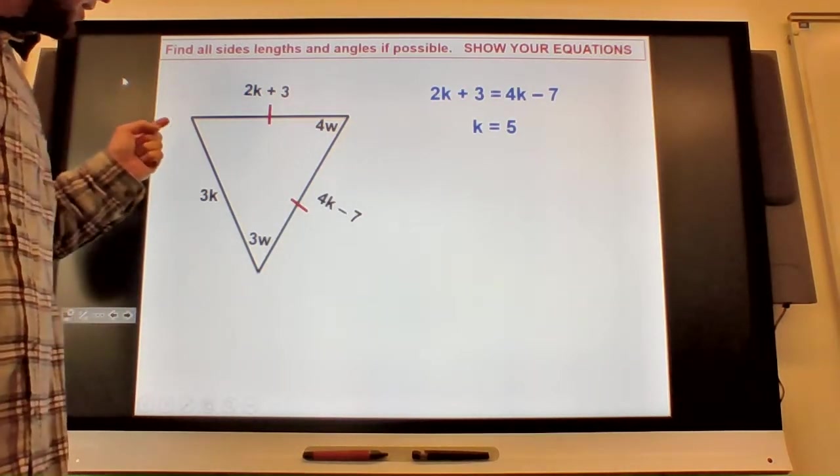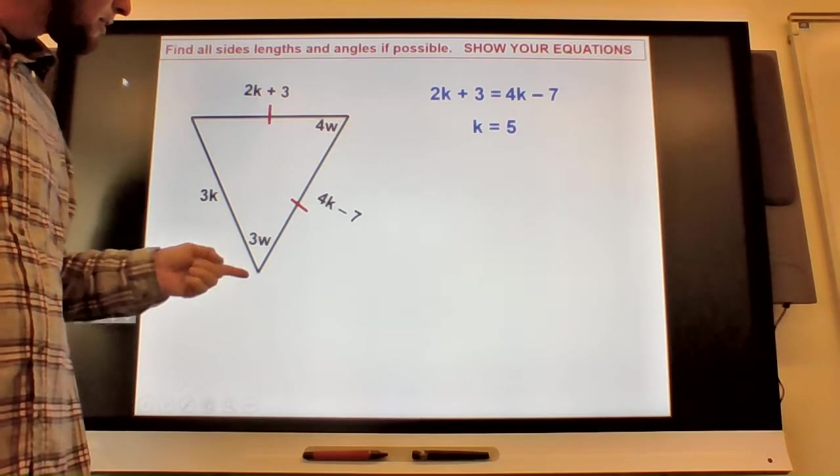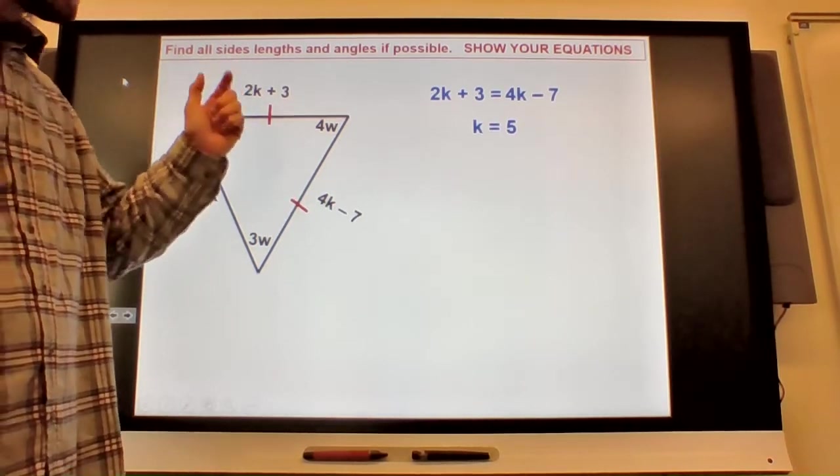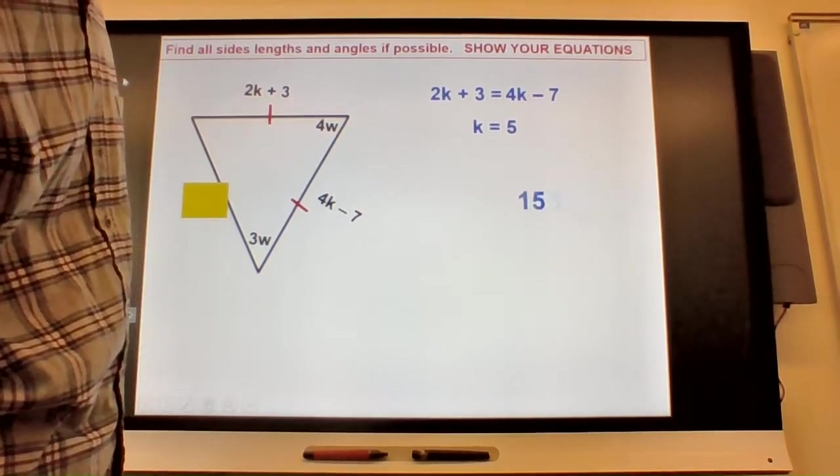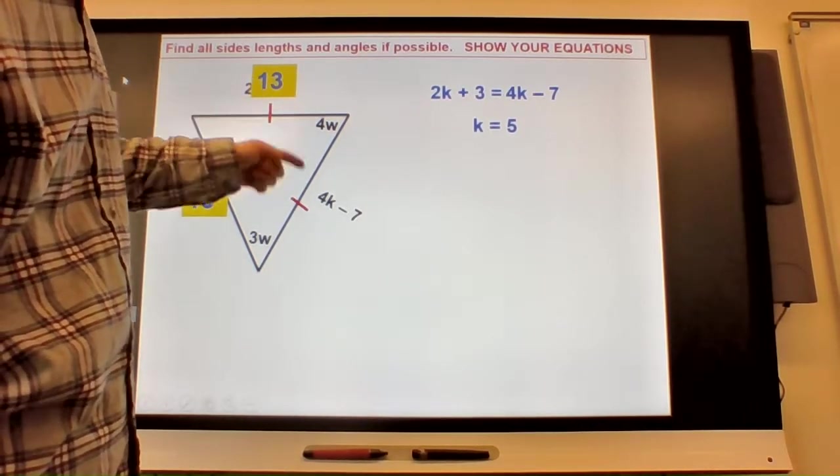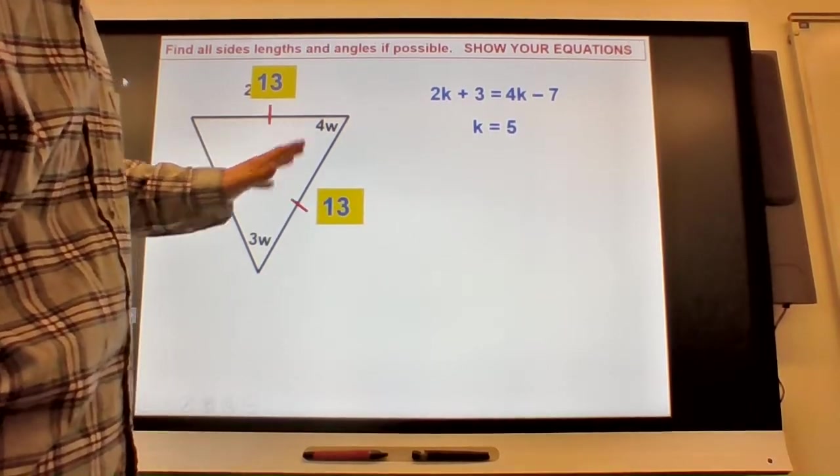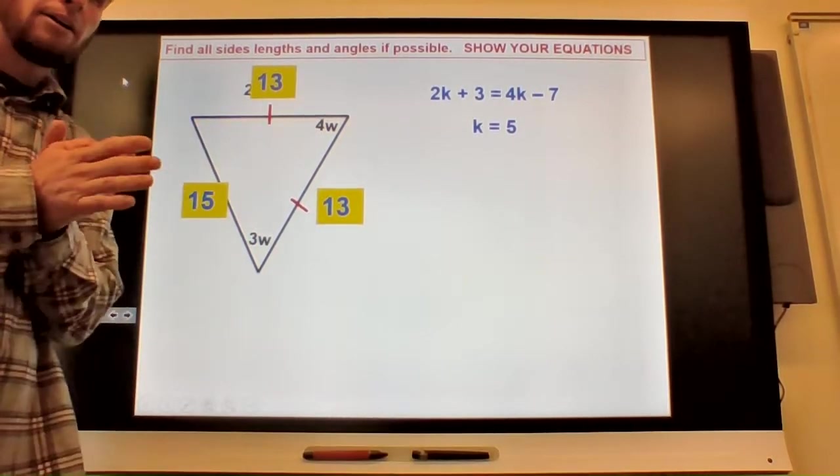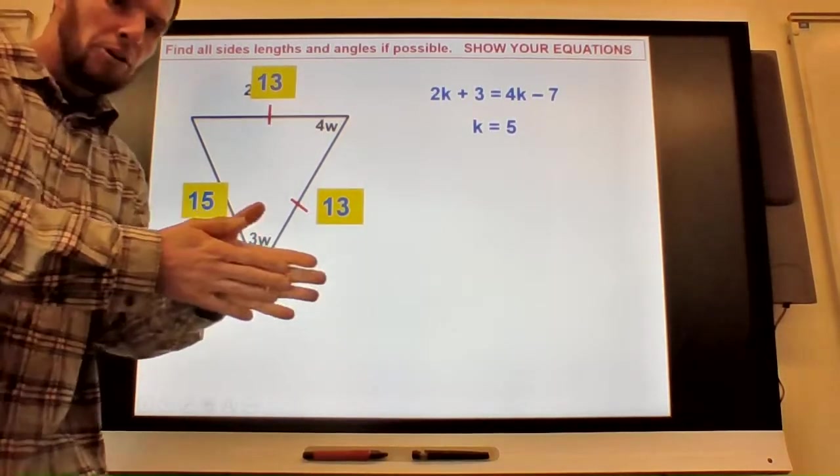If you plug that back in, this side should be 15. 10 plus 3 is 13. Hopefully got both of those. Yes. 13, if these are the same, 13 has to also be 13 here. So this is in fact an isosceles triangle without those little marks. It's 15, 13, 13.